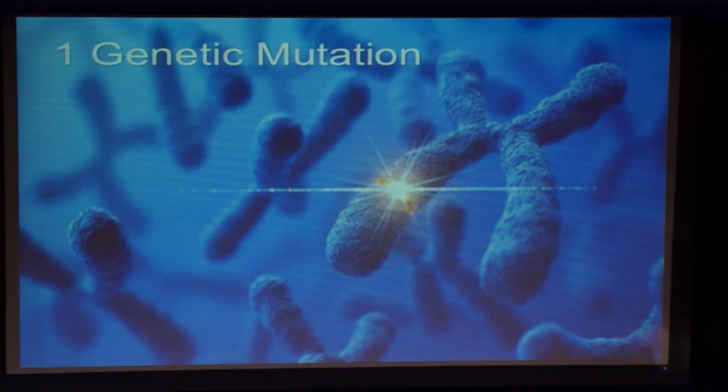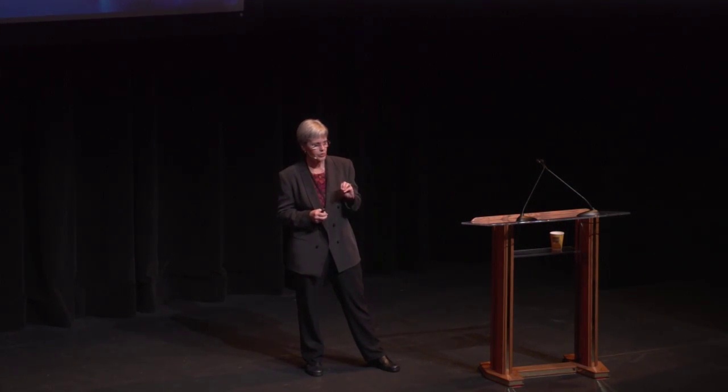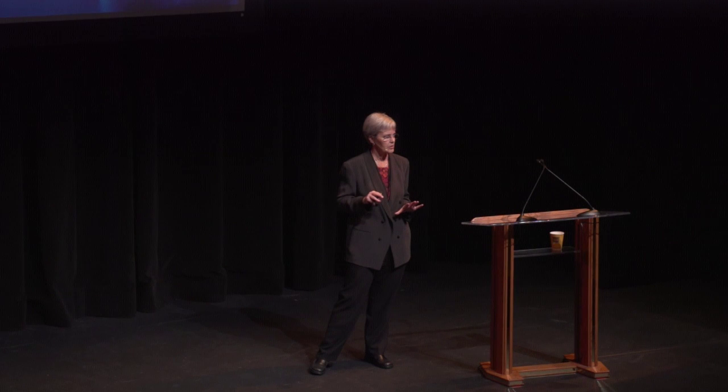One single genetic mutation — that's all we're talking about. A number of things can happen. Sometimes nothing happens; when the cell divides and the DNA is replicated, it may correct itself or it may not make a difference. Sometimes that cell may become sick, can't function, and dies. Another time it may produce an abnormal protein that is recognized by the immune system, and then the immune system gets rid of that cell. Most of the time things are okay in your 744 million miles of DNA.